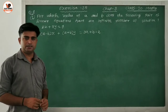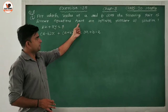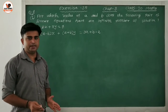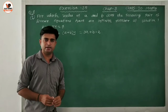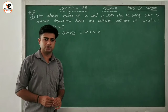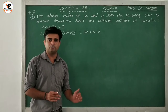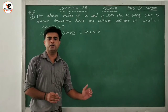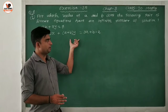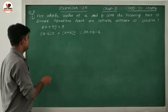So in this question we will use — kaunsi condition hai? — the condition for a linear equation having an infinite number of solutions. Jo equations diye gaye hain, unka solution infinite hai. So infinite solution ke liye hum jo ratio ki ek condition use kar sakte hain: A1/A2 = B1/B2 = C1/C2. Agar ye condition hogi, toh pair of linear equations ke liye infinite number of solutions milega.